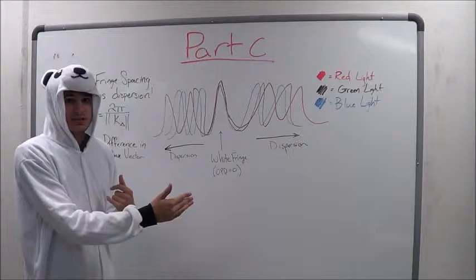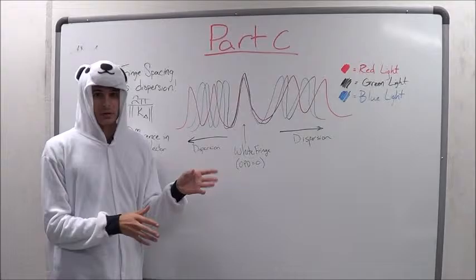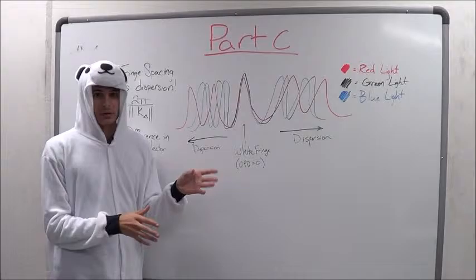As you start to move in one direction or the other and the optical path difference increases, you begin to get dispersion and the different colors start to separate from one another which gives us a rainbow of color. Once you get far enough from the central white fringe, the color peaks start to become indistinguishable and they start to blend together which gives us white light on both sides far from the center.